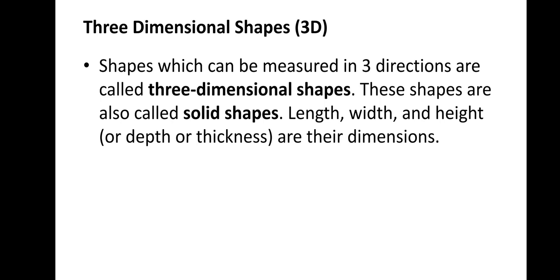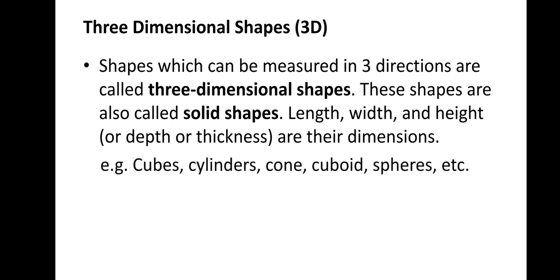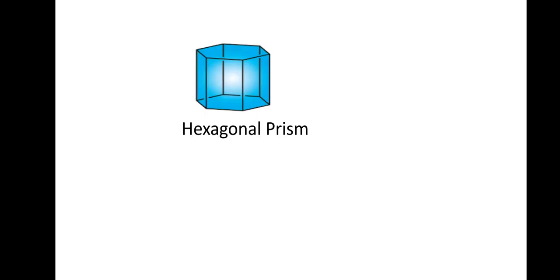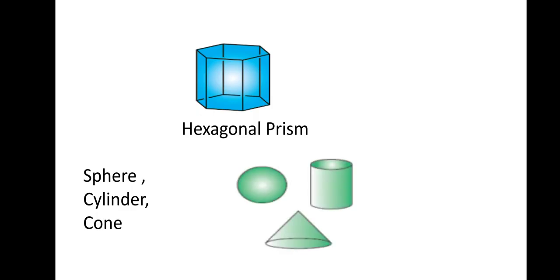We will recall 2-dimensional and 3-dimensional shapes, identify and match pictures with joint 2D and 3D shapes, and visualize 3D objects from different angles. Length, width and height or depth or thickness are dimensions of 3D shapes. Examples include cube, cylinder, cone, cuboid and sphere. Cuboid and cube are 3-dimensional shapes because they have length, breadth and height. More examples include hexagonal prism, sphere, cylinder and cone.